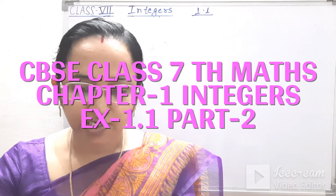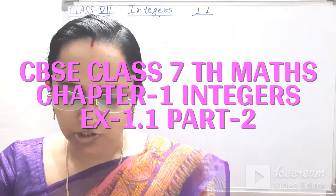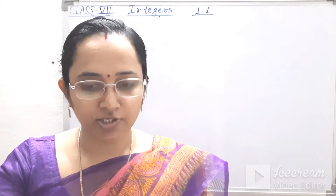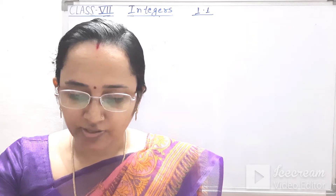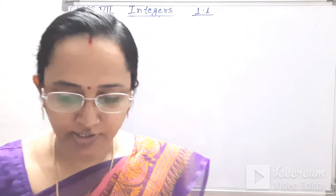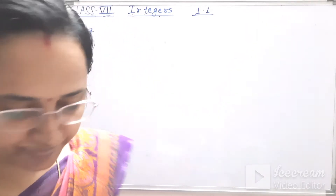Question number 7. In a magic square, each row, column and diagonal have the same sum. Check which of the following is a magic square.